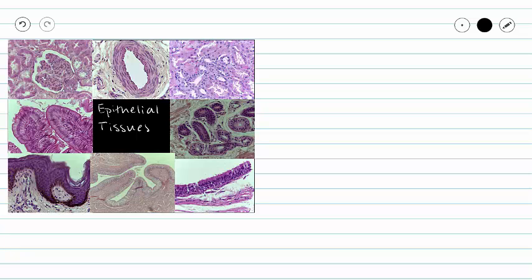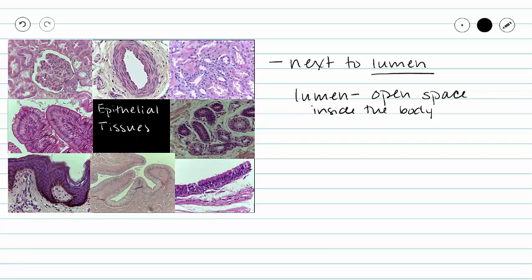This recording describes one type of epithelial tissue. All epithelial tissues have something in common — they are all next to a lumen. A lumen is an open space inside of our body. Think of any body cavities, like the space inside your stomach or inside your blood vessels — those are spaces inside of our body.